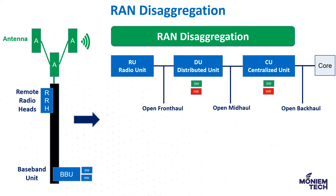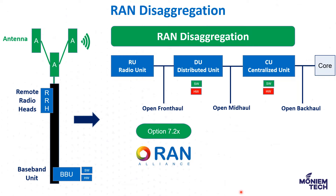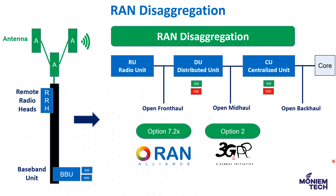This functional split is generally referred to as RAN disaggregation, which we discussed in the last episode. The fronthaul interface between the RU and DU is called the fronthaul and is also called Option Split 7.2x, defined and standardized by the O-RAN Alliance. The disaggregation or function split between CU and DU is called Option 2 and is standardized by 3GPP.